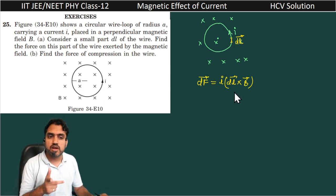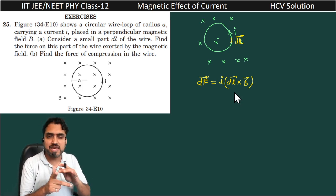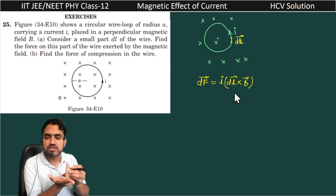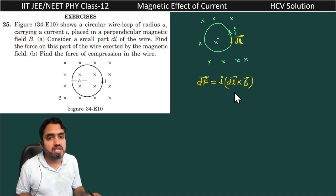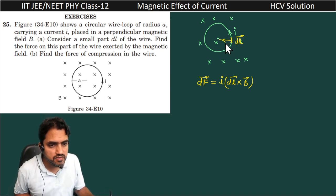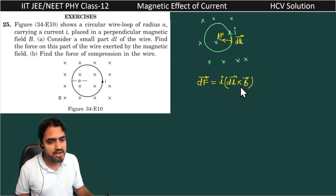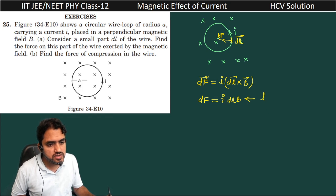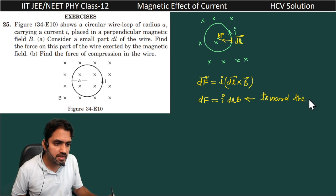What is Fleming's left hand rule? This is FBI. The direction of magnetic field is into the plane of paper, and the direction of current is upward. So the direction of force will be towards the center. The differential force df is equal to i·dl·B, and the direction is towards the center.